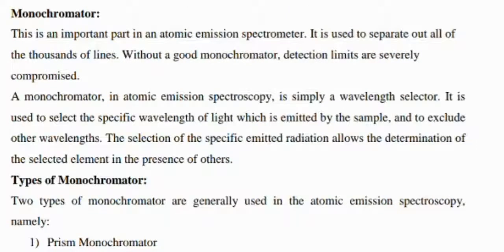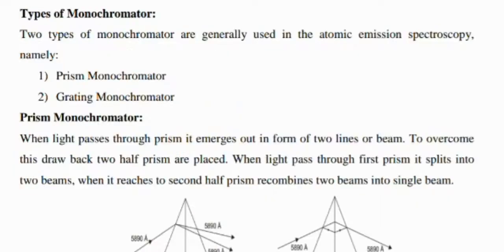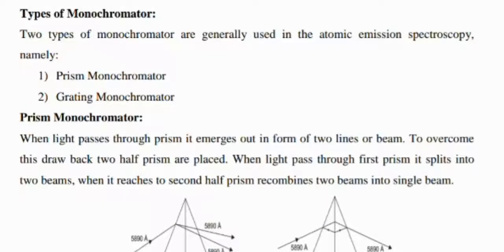Monochromator, like in atomic absorption, is also an important part and is used to separate out all the thousands of lines. It has two types: prisms and grating monochromator. When light passes through a prism, it emerges in the form of a line or beam. Grating monochromator gives better results and replaced prisms with linear dispersion.